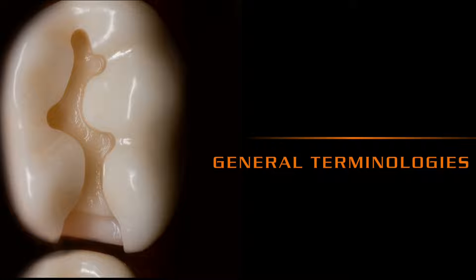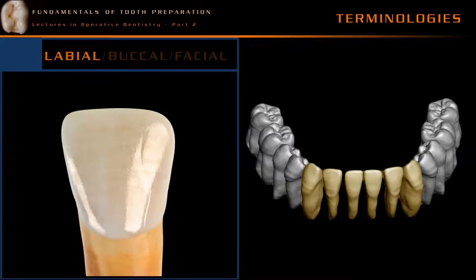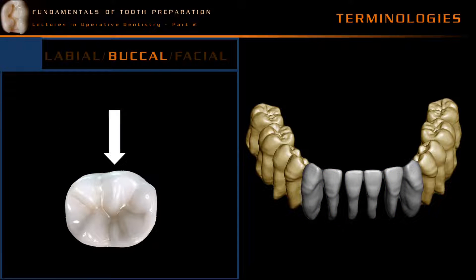Terminologies could never be understood without knowing the surfaces of the teeth. The labial surface is the surface of the teeth which faces the lips, and it is present in all anterior teeth. The buccal surface is the surface of the teeth which faces the cheeks; all premolar and molar teeth possess a buccal surface. The facial surface is a terminology used to denote the labial or the buccal surface.